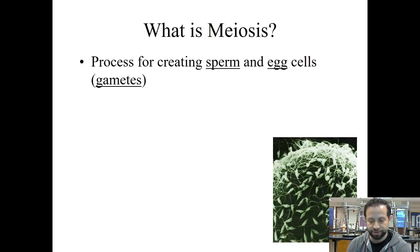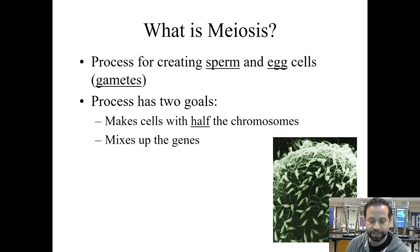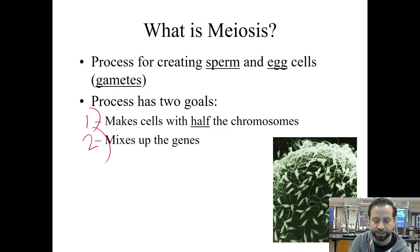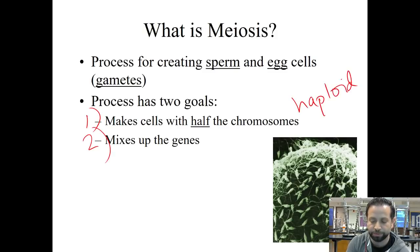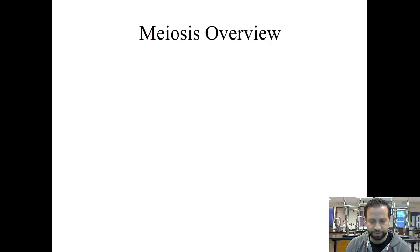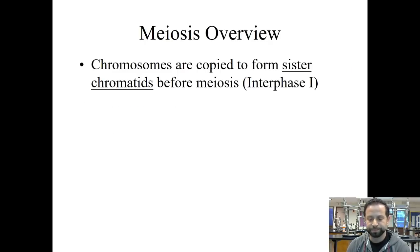What is meiosis? It's a process for creating sperm and egg cells — we call those gametes. It has two goals. Goal one is to make cells at the end with half of the chromosomes — we call that haploid. The second goal is to mix up the genes, and we'll get into more detail about what I mean by that. So here's an overview of meiosis.